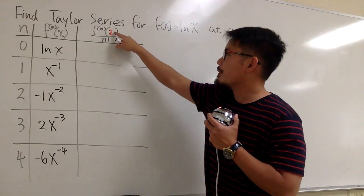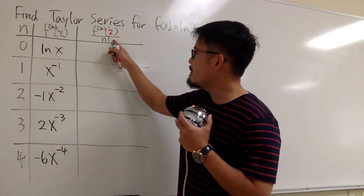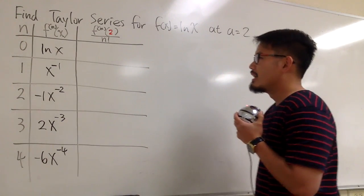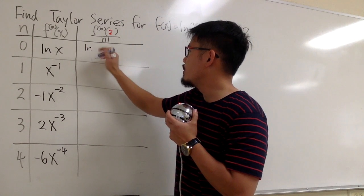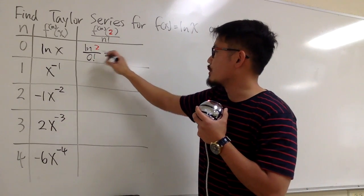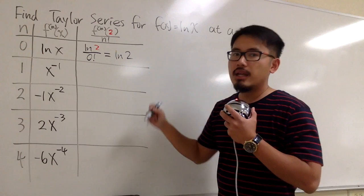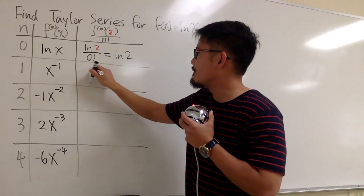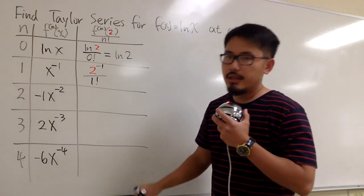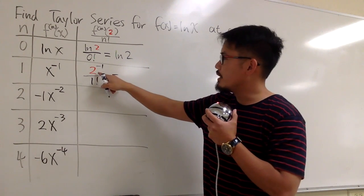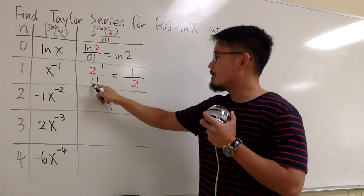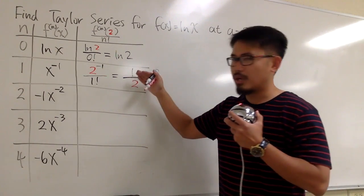Now we are going to plug in 2 into all these x values and then divide by n factorial according to these n values — Taylor's formula tells us to do that. For the first one, plug in 2 into ln(x), so we have ln(2) over 0 factorial. By definition, 0 factorial is just 1, so here we will have ln(2) only. Next, plug in 2 to get 2 to the negative 1 power over 1 factorial. We can write 2 to the negative 1 as 1 over 2, and the 1 factorial in the denominator doesn't really do anything, so this gives us 1 over 2.